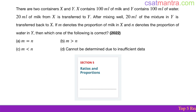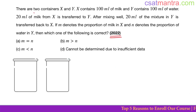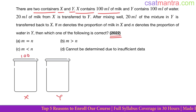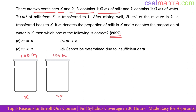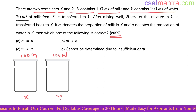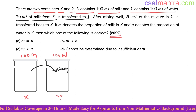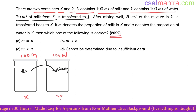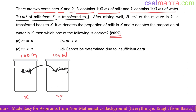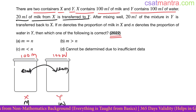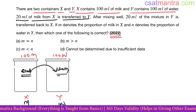This question is from 2022, based on ratios and proportions. There are two containers X and Y. X contains 100 ml of milk and Y contains 100 ml of water. 20 ml of milk is transferred from X to Y, so X now has 80 ml of milk. This is the milk container and this is the water container.